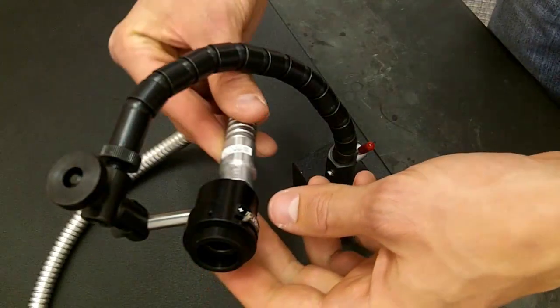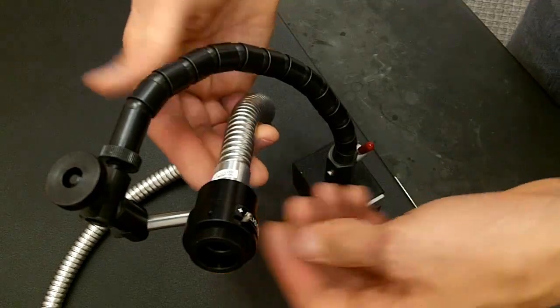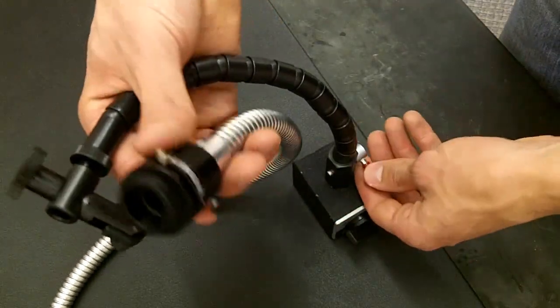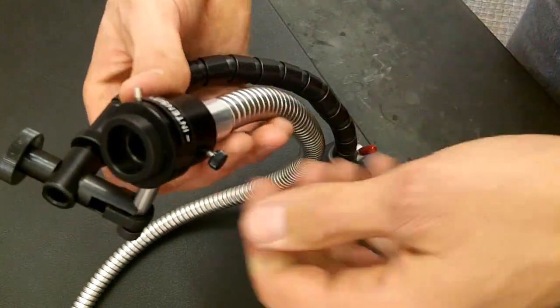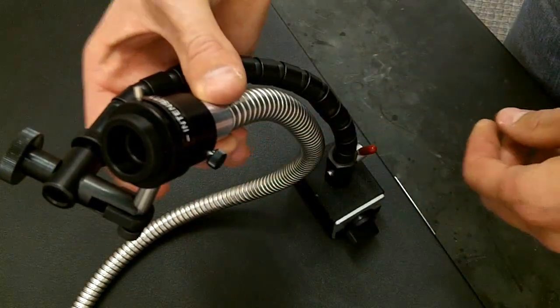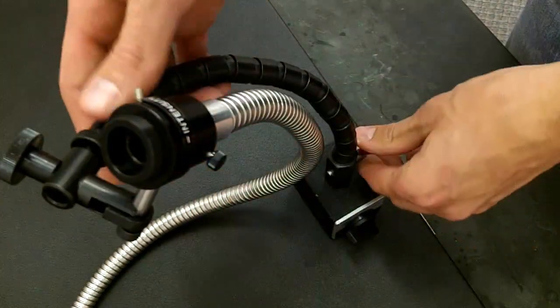Now I'm going to attach the fiber optics to the fiber optic arm. This screw down here just makes sure that the fiber optics are locked in place and won't come out of the fiber optic arm.